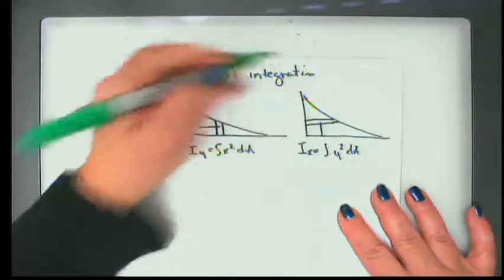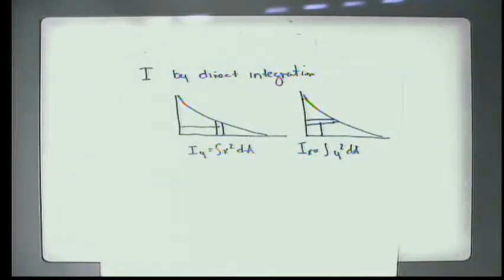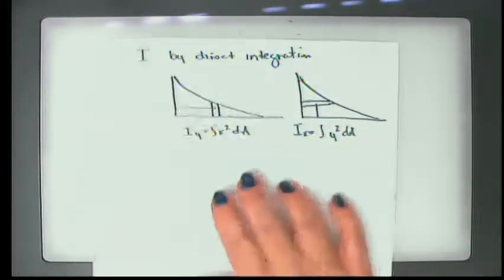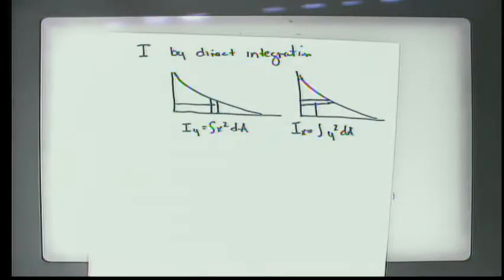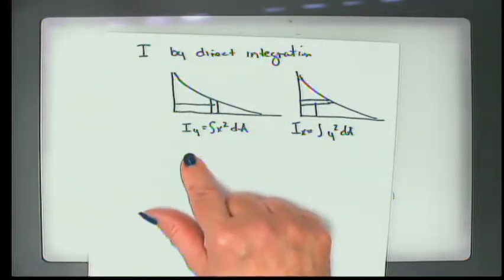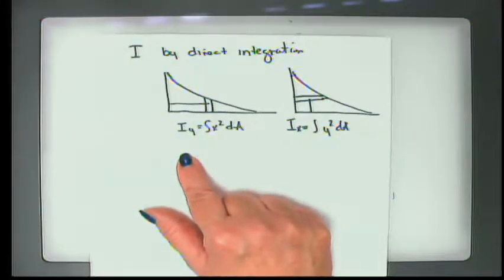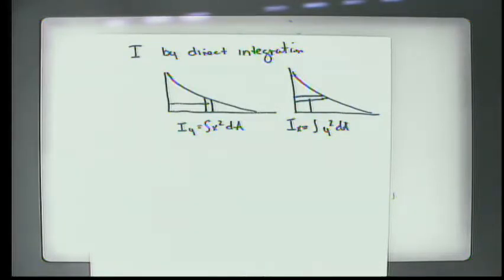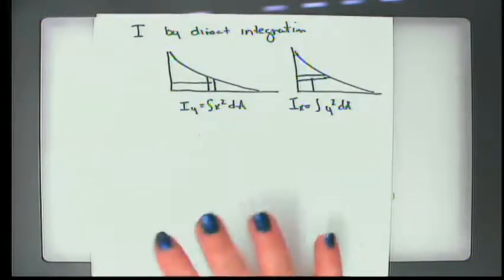Do we need to find the centroid first and then work from there? Not unless they ask you for the moment of inertia about the centroid — in this case we're just finding it about the axes, and then we'll expand that conversation. You can use a double integral; it is kind of like doing the integral twice. I'm not going to teach that today — I'm going to teach you to rotate the element, and then we can talk about the other approach as well. You're asking excellent questions, which means you're already thinking ahead.